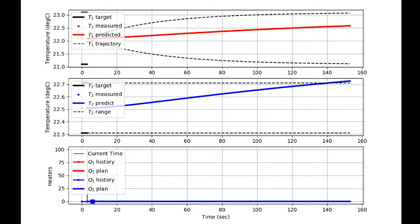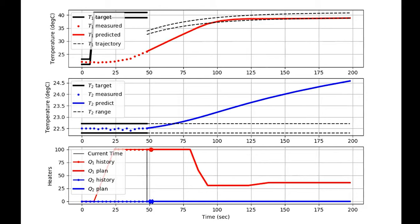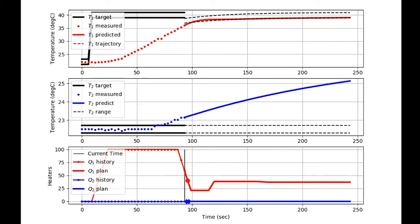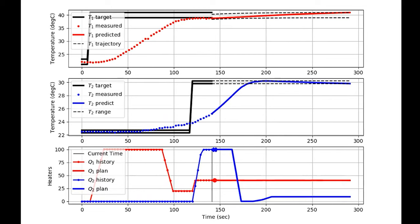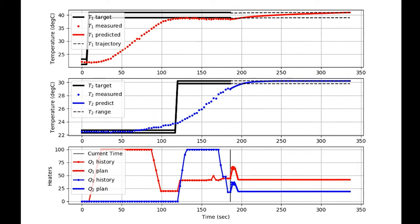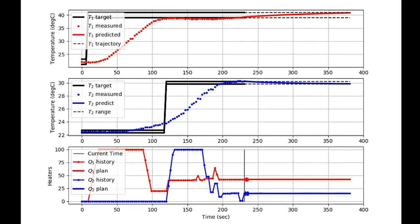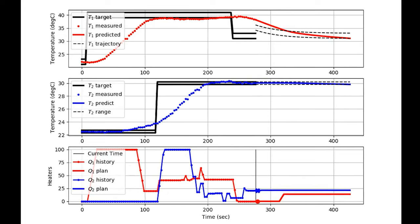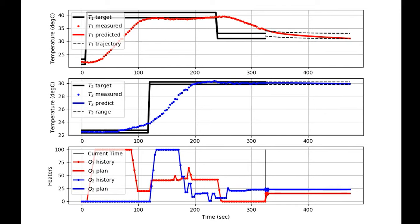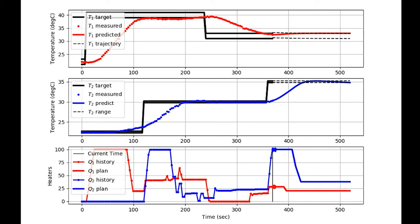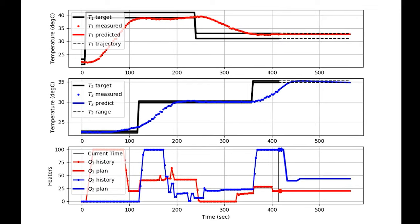We can also go on to other modules, like model predictive control. In this case, we have a set point range, two mid plots showing the two temperatures, and then the move plan. That little black line on the bottom shows the current time and the next move plan, while prior to that is the actual move plan that took place. You can see a future prediction horizon with dashed lines showing how MPC is attempting to get to the new set point. These modules might be too advanced for an undergraduate course, but they're there in case you'd like to use them.